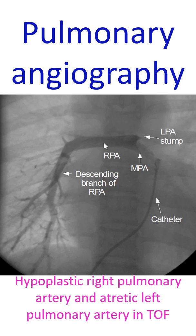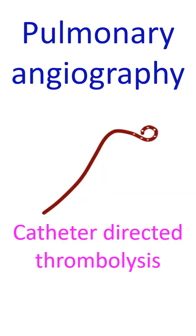Pulmonary angiography is still useful in the evaluation of complex congenital heart disease and prior to procedures like pulmonary angioplasty and pulmonary thromboendarterectomy for chronic thromboembolic pulmonary hypertension. It is also done to guide catheter-directed thrombolysis for acute massive and submassive pulmonary embolism, and prior to coiling of pulmonary arteriovenous malformation or fistula.